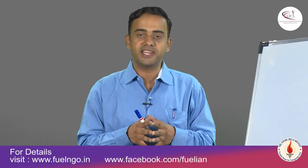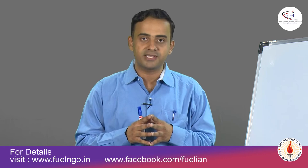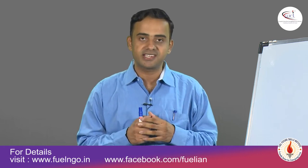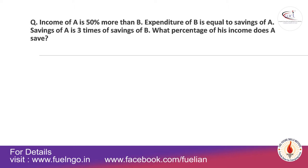In this question, we are going back to touching some more basics of percentages. Just a quick recap: income of A is 50% more than B, expenditure of B is equal to savings of A, and savings of A is 3 times that of B. So what percentage of his income does A save?